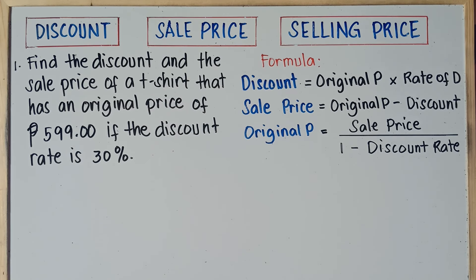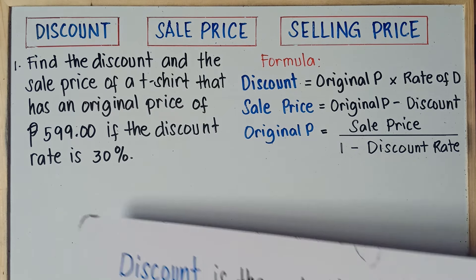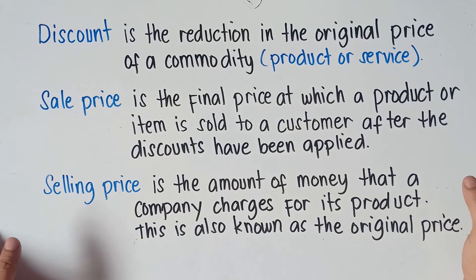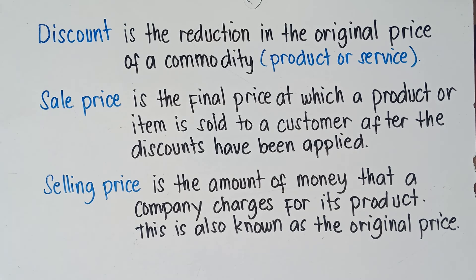Before we start with example number one, we need to define first what is discount, what is sale price, and what is selling price. Discount is the reduction in the original price of a commodity, product, or service. Sale price is the final price at which a product or item is sold to a customer after the discounts have been applied. And selling price is the amount of money that a company charges for its product — this is also known as the original price.